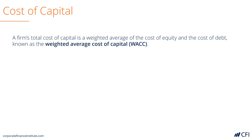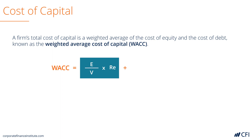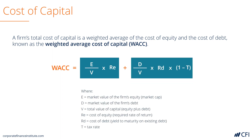A firm's weighted average cost of capital is equal to the proportion of equity relative to total capital times the cost of that equity, plus the proportion of debt to capital times the after-tax cost of that debt. For a full tutorial on weighted average cost of capital, please see CFI's articles and videos on WACC.